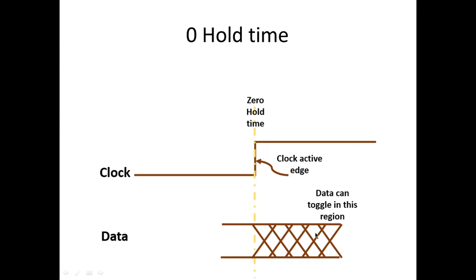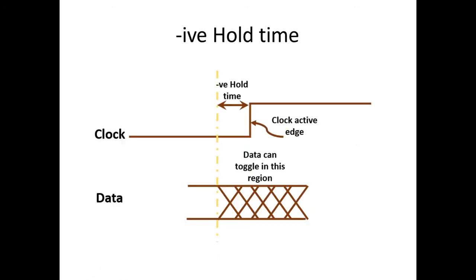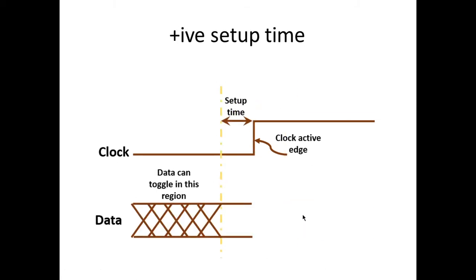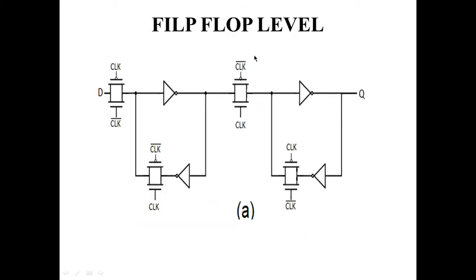We should not confuse between positive setup with negative hold time, and negative setup with positive hold time. The key difference is in the toggling of data: in zero setup time, data can be toggled before the clock edge as much as wanted, whereas with zero hold time, data stability is anchored at the clock edge. This is the theoretical analysis; now we will see how it practically works at the D flip-flop gate level.